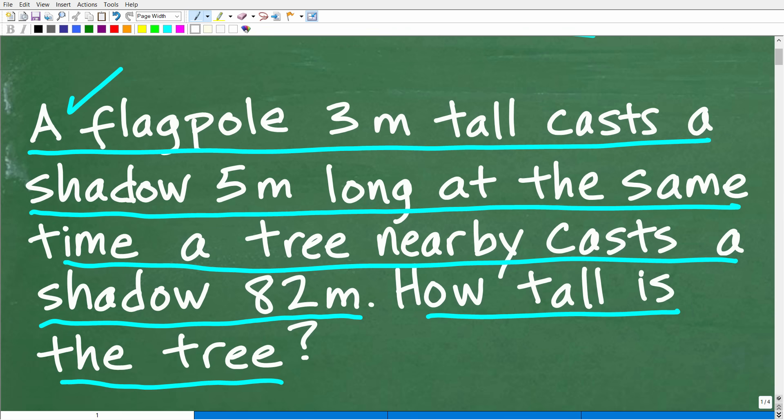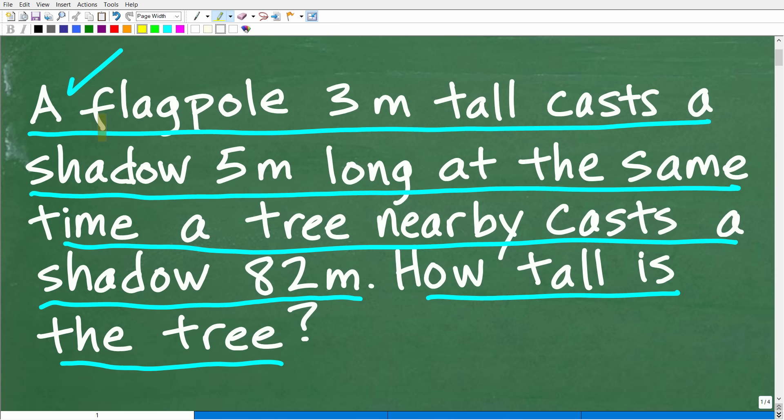Okay, let's take a look at this question one more time before I show you the answer. So a flagpole three meters tall casts a shadow five meters long. Right? So you kind of have to visualize this problem. At the same time,